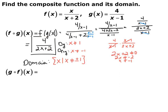For the domain, the domain of the inside function g of x is a rational function, so x cannot equal 1. Then the domain of your final function — it's a rational function, so the denominator cannot equal 0. Once you solve that, x cannot equal negative 1. To find the final domain, take the most restrictive possibility, which means x cannot equal plus or minus 1.